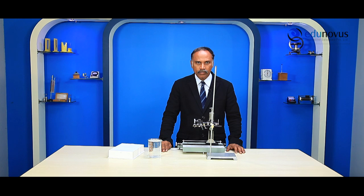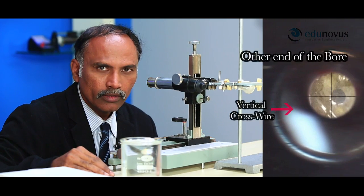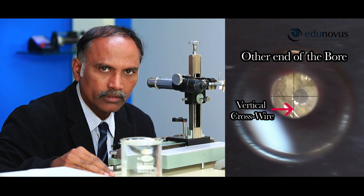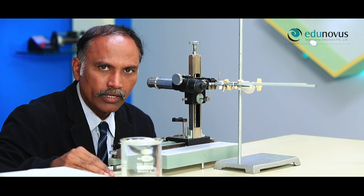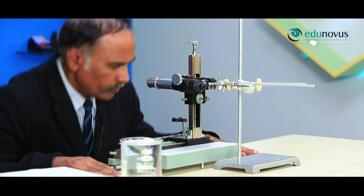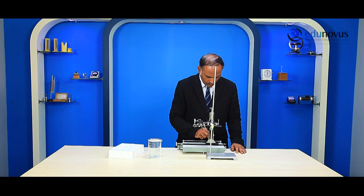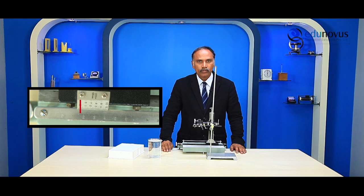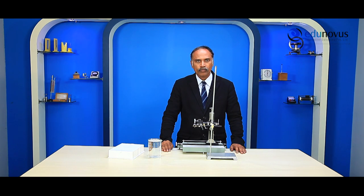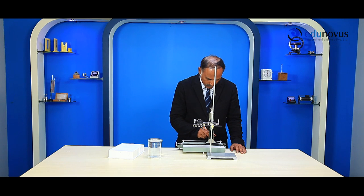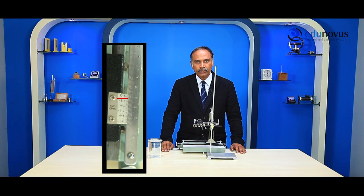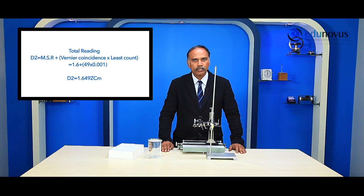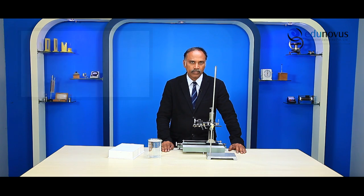Looking through the eyepiece, we move the microscope until the vertical cross wire touches the other end of the bore. Here you can clearly see that the vertical cross wire touches the other end of the bore. We note down the reading of the horizontal scale. The main scale reading is 1.6 centimeters, the vernier coincidence is the 49th division, therefore the total reading is 1.649 centimeters. Note this reading as D2.